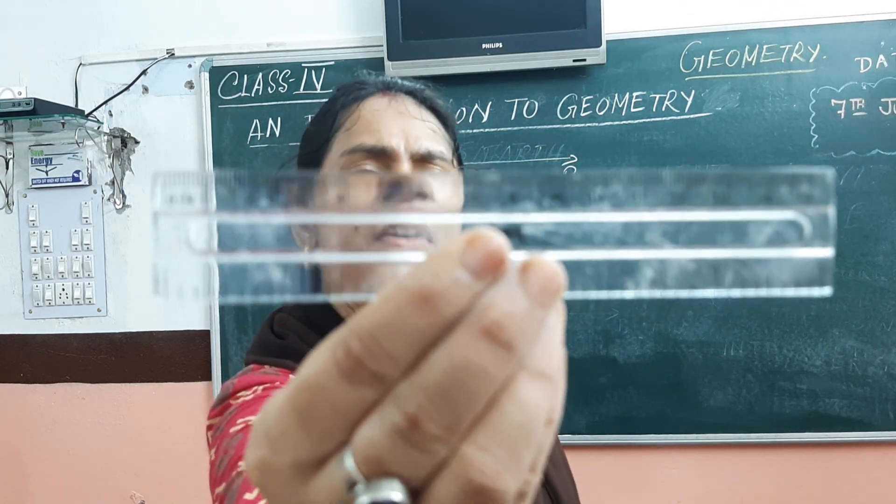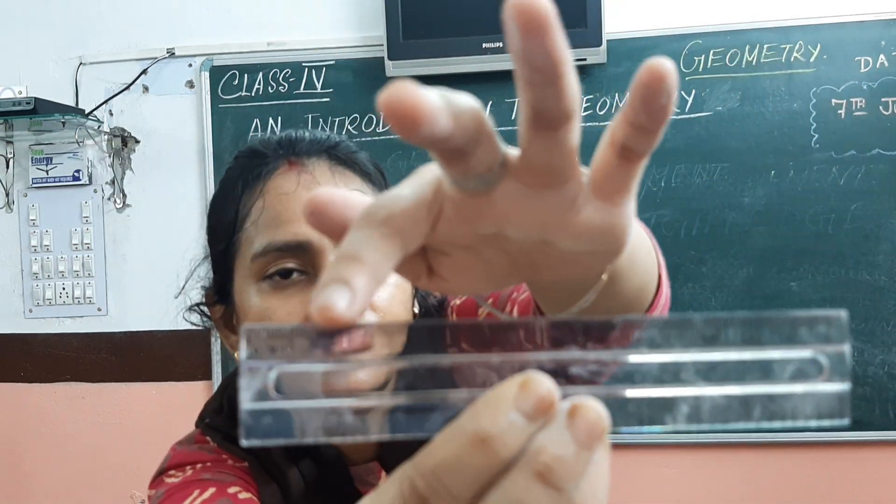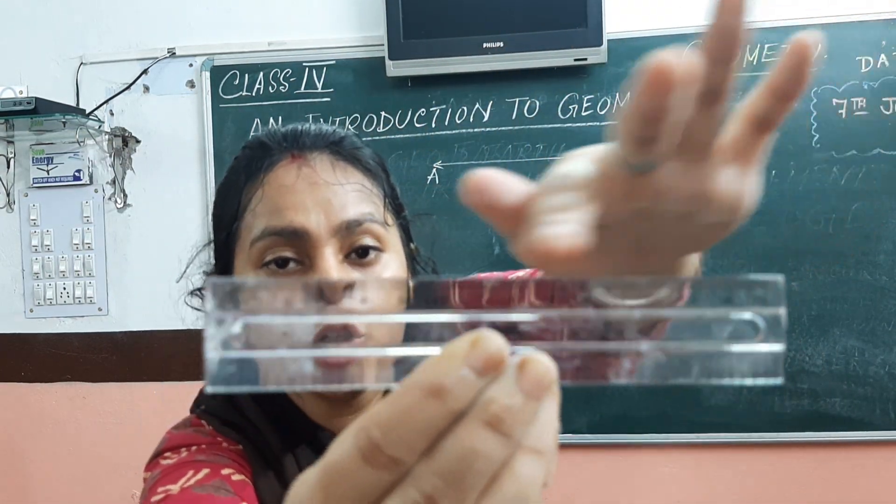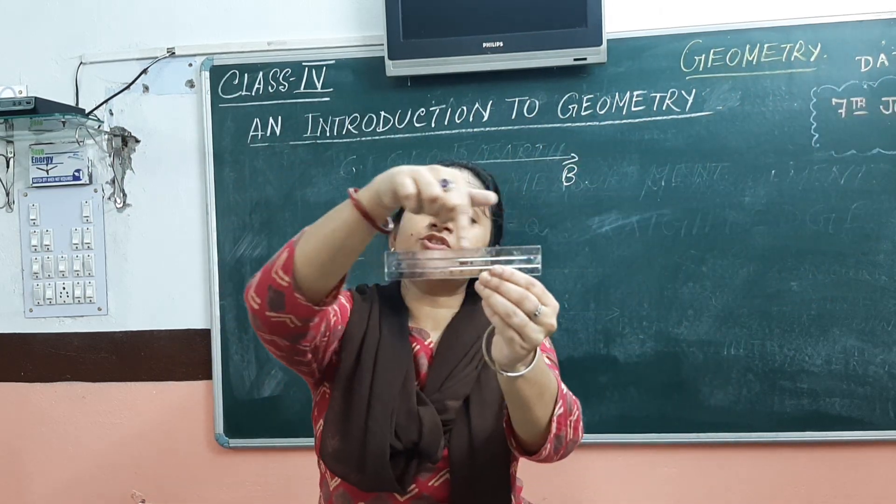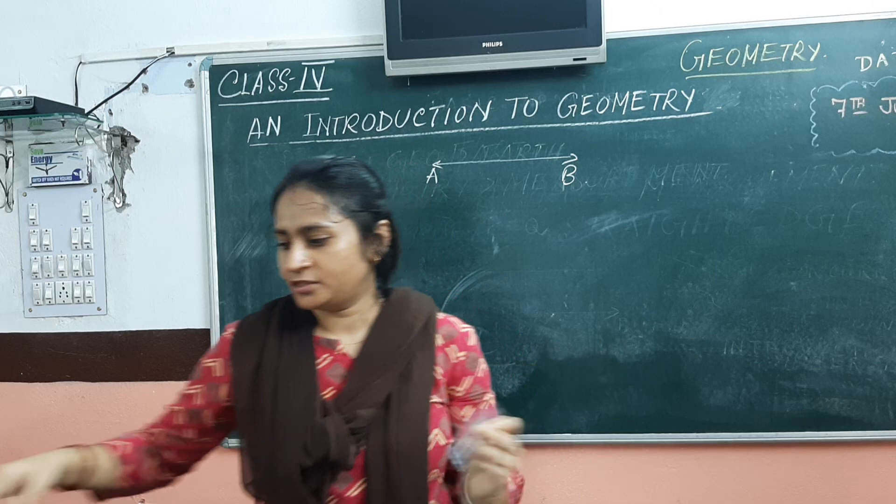that your ruler is graduated into some small divisions. See? It is graduated into meters and centimeters on one side and inches on the other side. You can see.